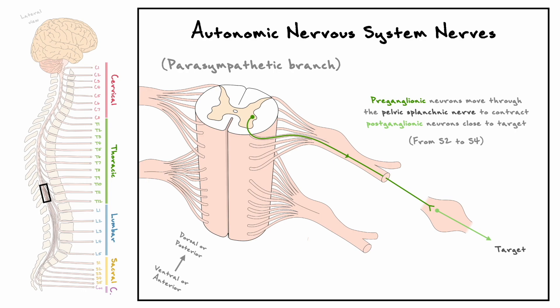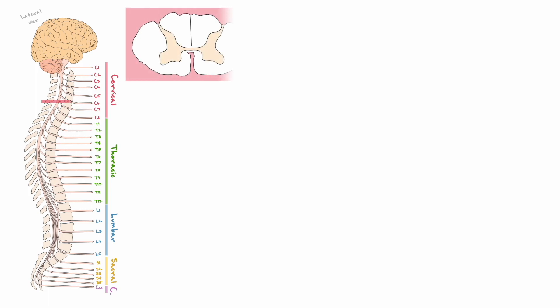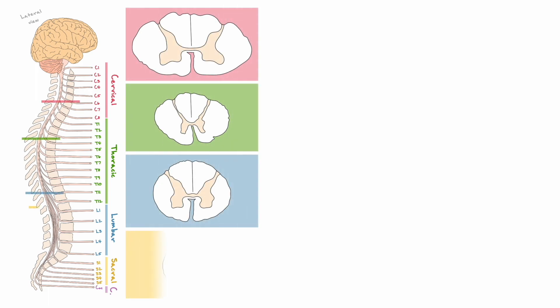With these structures now clarified, let's consider the internal anatomy of the spinal cord. Let's take a look at a cross section from the cervical, thoracic, lumbar, and sacral divisions of the spinal cord. The first glaring aspect you might notice from these cross sections is that regardless of the level, they all pretty much look the same. Although they have small differences between regions, they generally share the same anatomical and functional properties.